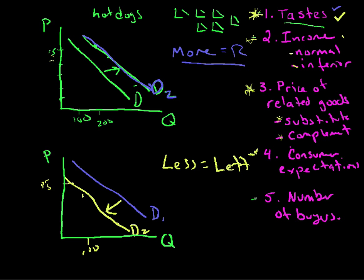And an easy one, number of buyers. More people who buy hot dogs, more people at the baseball game, demand for hot dogs shift to the right. Fewer people at the baseball game, demand shifts to the left.